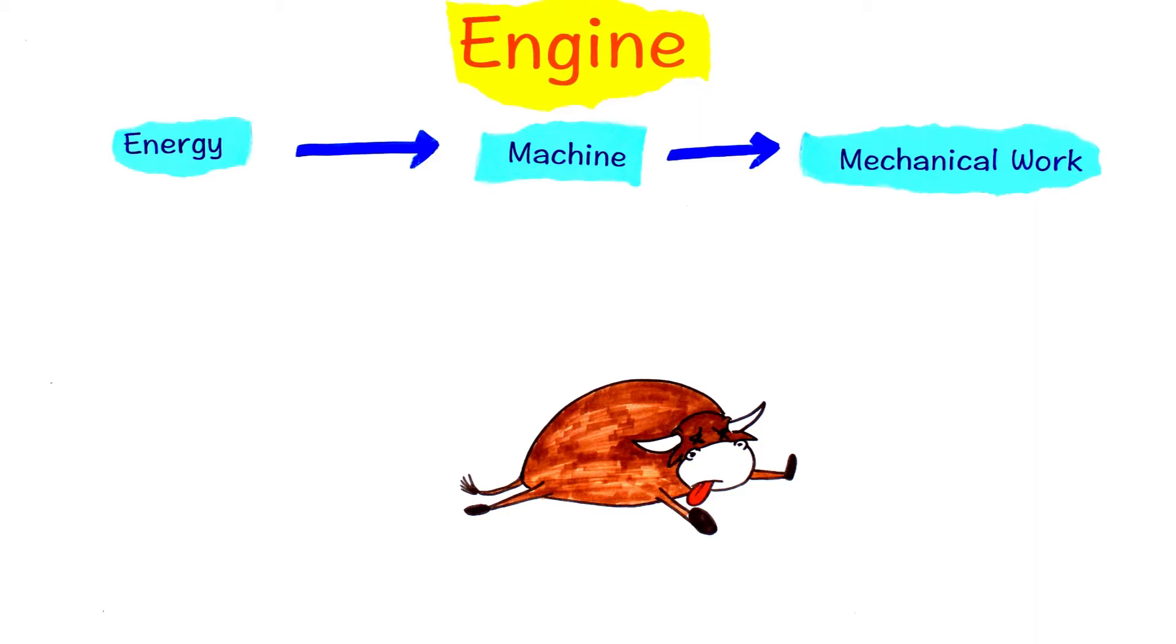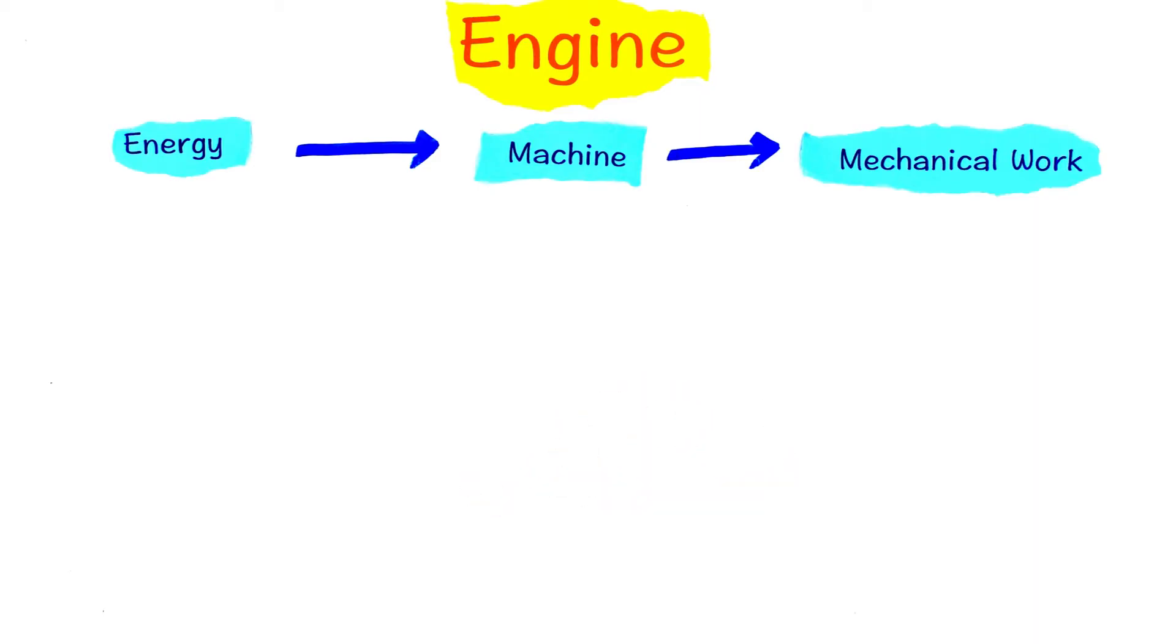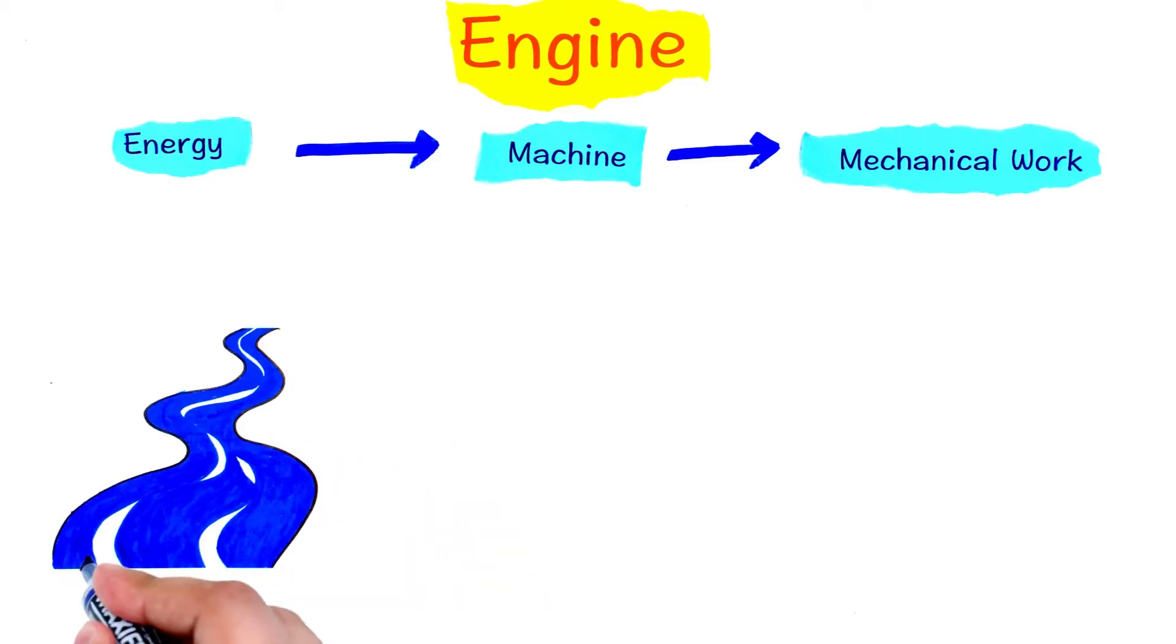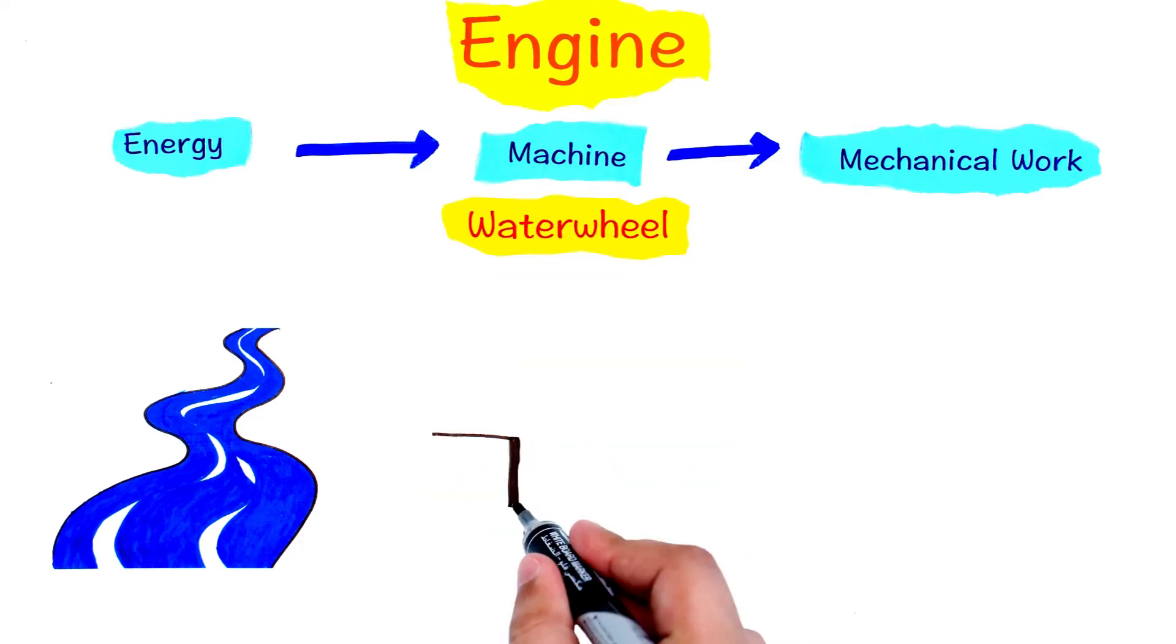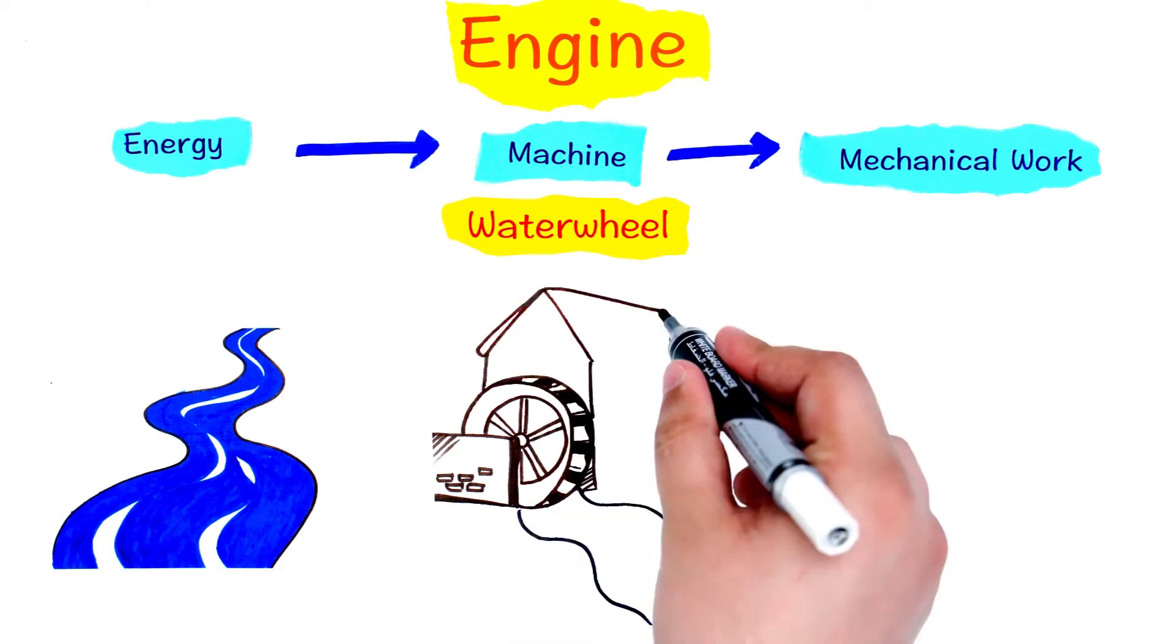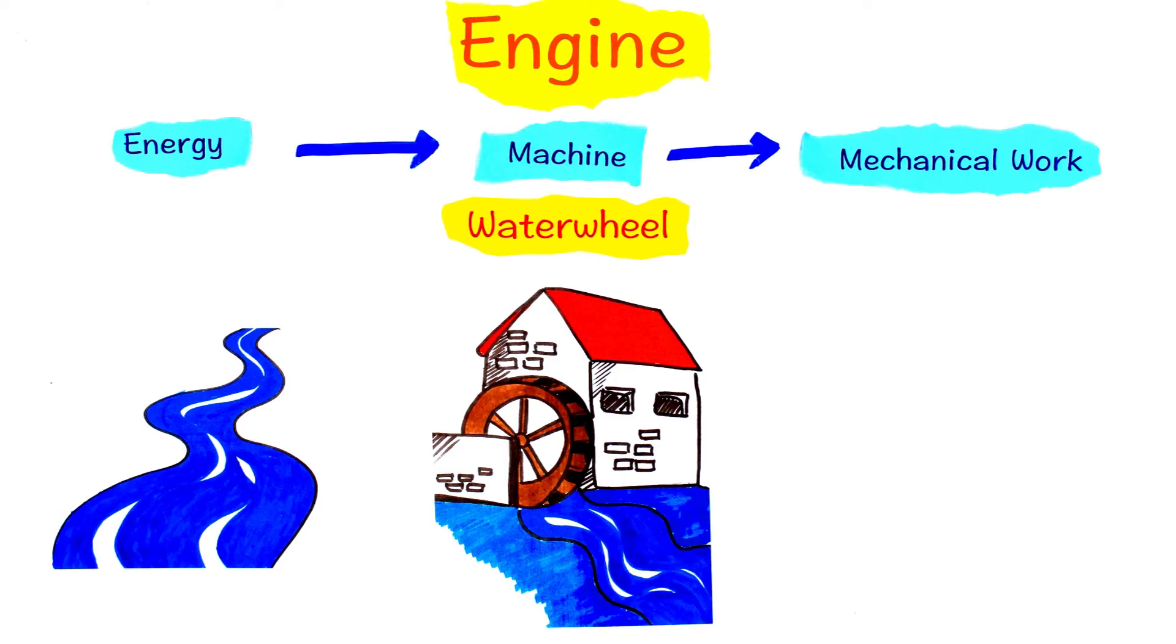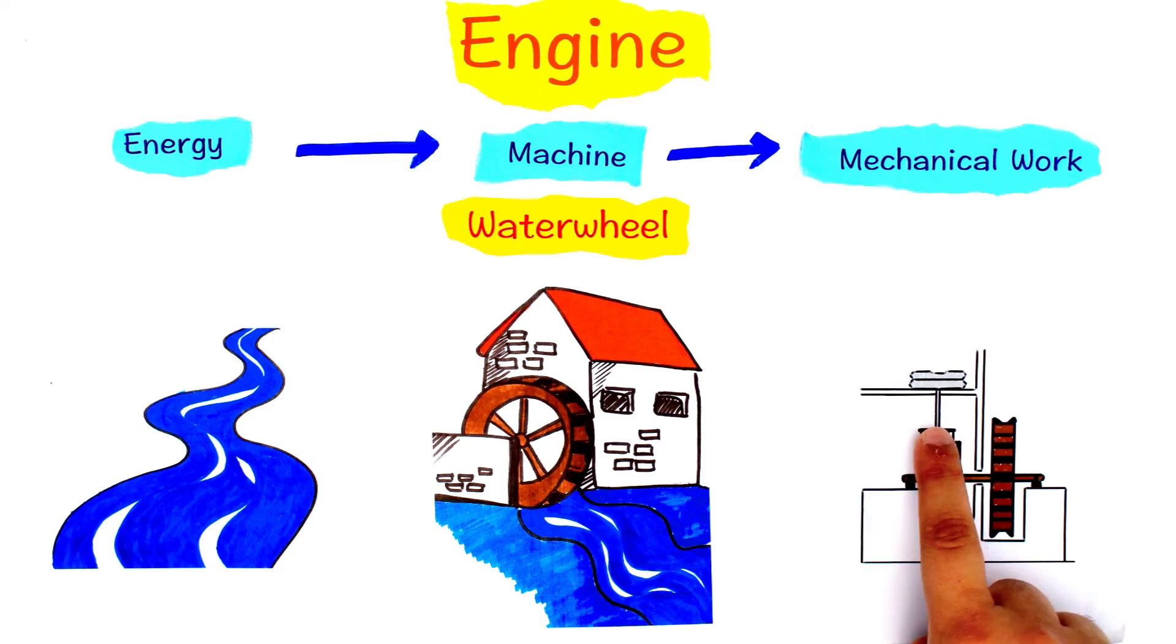So our ancestors started to look for another source of energy that doesn't have all these problems, and they found what they were looking for in running water. They noticed that running water has energy and can carry rocks for long distances. So they invented the water wheel to make use of this energy. These wheels are placed in rivers or water streams. The power of the running water will make these wheels turn. This movement is then transferred through a set of wooden axles and gears to the inside of the water wheel building to perform different tasks like milling grains.